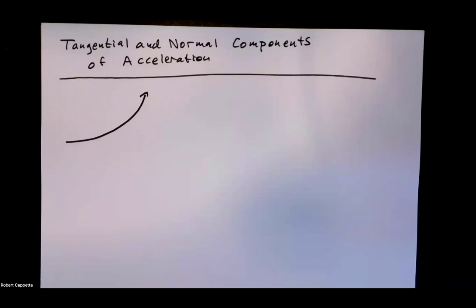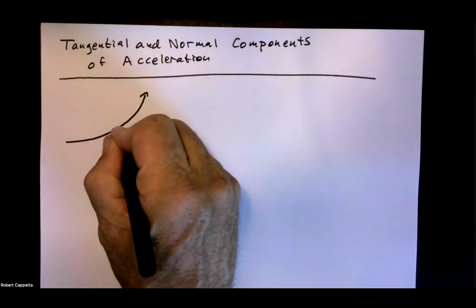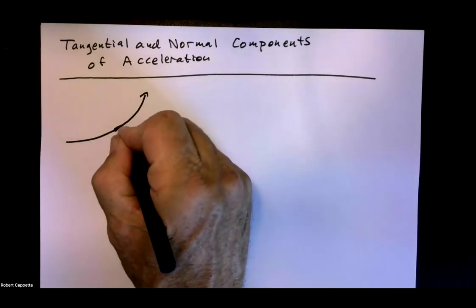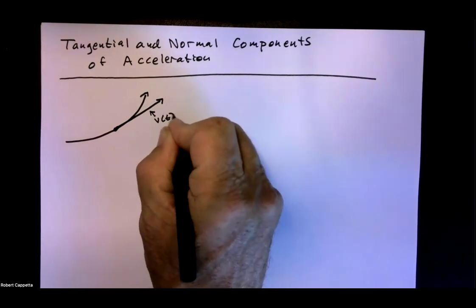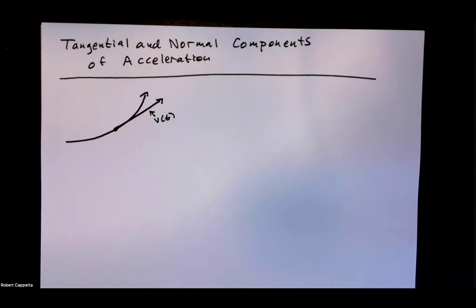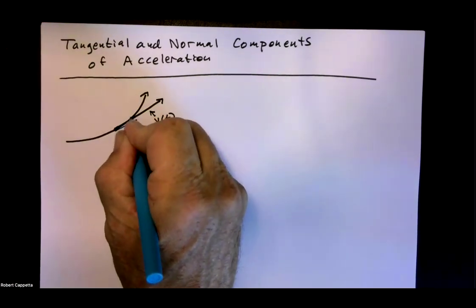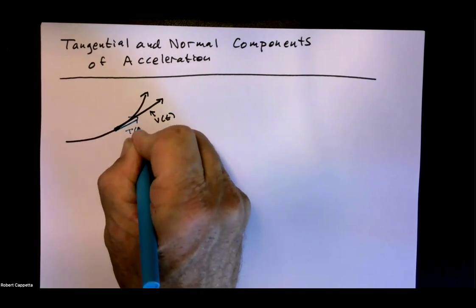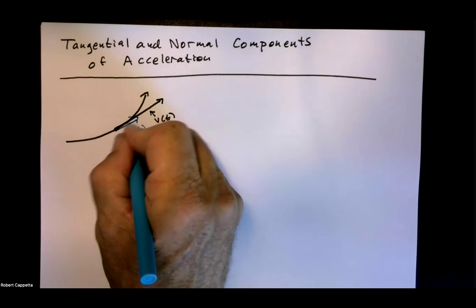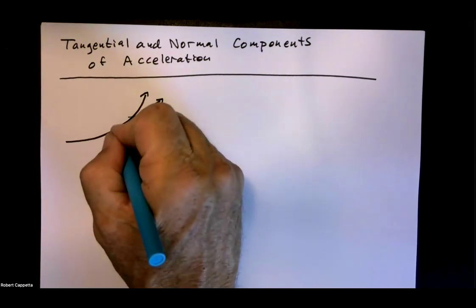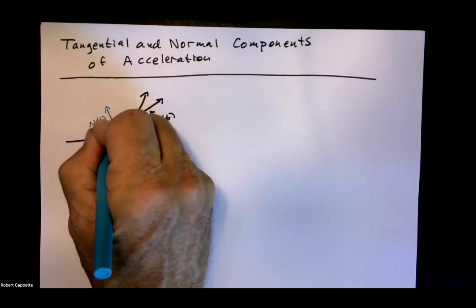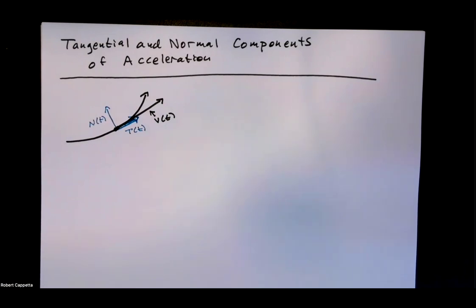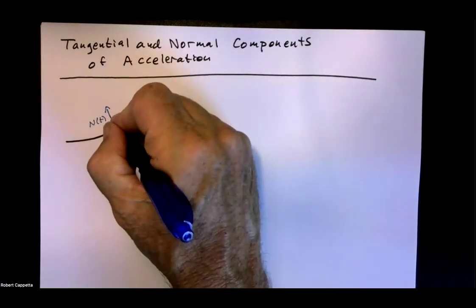This lesson is on tangential and normal components of acceleration. I have a vector valued function r of t, and I can find its velocity v of t. The unit tangent vector T of t is parallel to v of t — just some scalar portion of it. And N of t is perpendicular to that. What I want to think about is how the acceleration works relative to these two things.